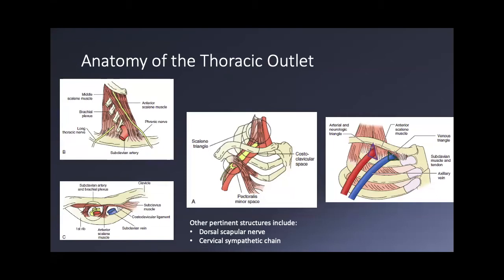The scalene muscles originate on the transverse processes of the cervical vertebrae. When taking the scalene off those transverse processes, the cervical sympathetic chain is immediately medial — that's one way it can get injured. Injury to the cervical sympathetic chain causes Horner syndrome. Findings include meiosis — asymmetric pupils — and anhidrosis on the affected side, as well as asymmetric facial sweating.